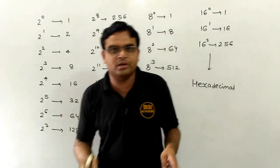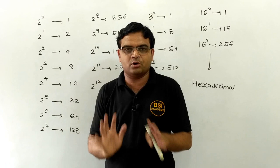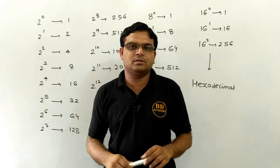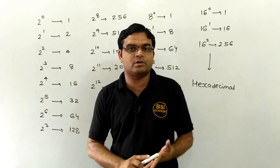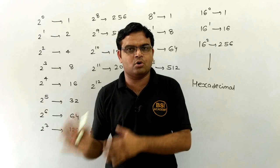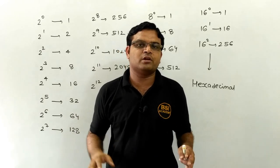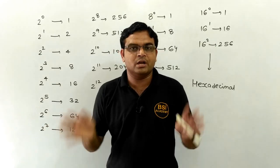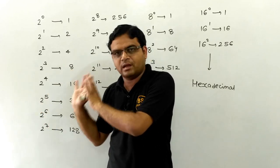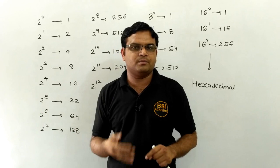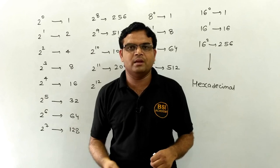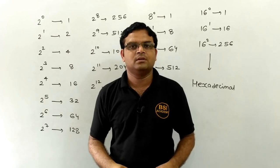So students, in this introductory video, I discussed only the important parts of the number system. We covered four kinds of number systems: decimal, binary, octal, and hexadecimal. We discussed how many digits each system comprises and what conversions we will study in future videos, along with the power values that will help us. If you still find any problem or difficulty in exam preparation, please mail to my email ID: sandeep2688m at gmail.com. Thank you, students.